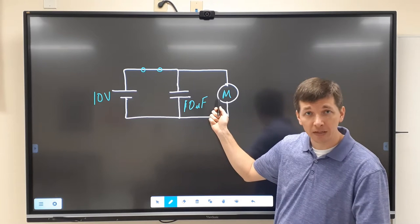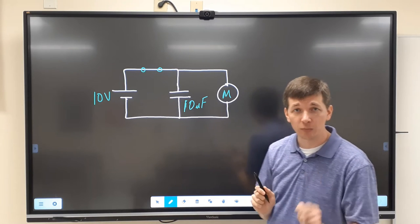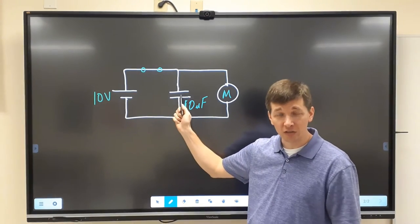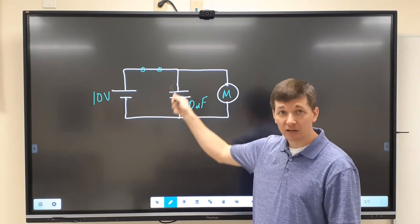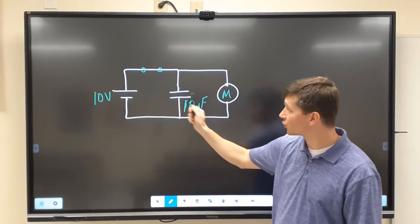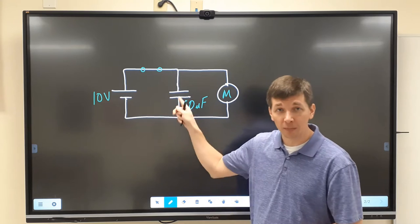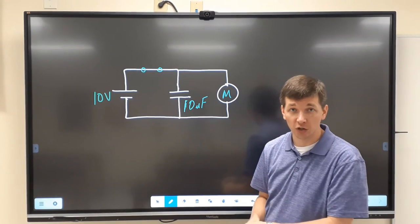And then we have our multimeter. This multimeter has two purposes. One, it's going to be measuring the voltage of this capacitor right here as it discharges. Secondly, it's going to serve as the resistor for the capacitor to discharge through.